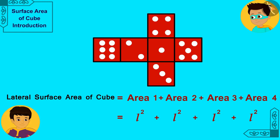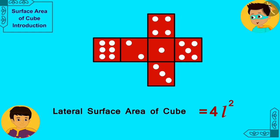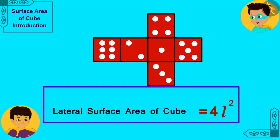But all these square sides are congruent. So we can write it in this way as well. Hey Manas, we also found the formula for the lateral surface area of a cube.